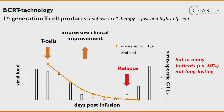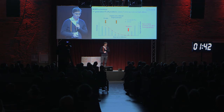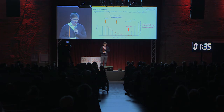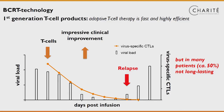This is one example where we infuse our so-called first-generation T-cell product into immunosuppressed solid organ transplant patients. You can see that when we infuse the cells, the viral load is dramatically declining within a short period of time, and we have this impressive clinical improvement. However, we do see a relapse in many patients, and the viral infection and viral disease come back.